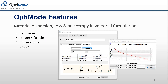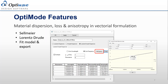Material dispersion is addressed through the Sellmeier models or through the Lorentz-Drude fitting algorithms. The Lorentz-Drude materials allow users to either specify the parameters for the model — the strength, the plasma frequency, the resonant frequency, and the damping — or the user can import a data set, either from experimental data or from a reference, that the product can then fit and use through the simulations.